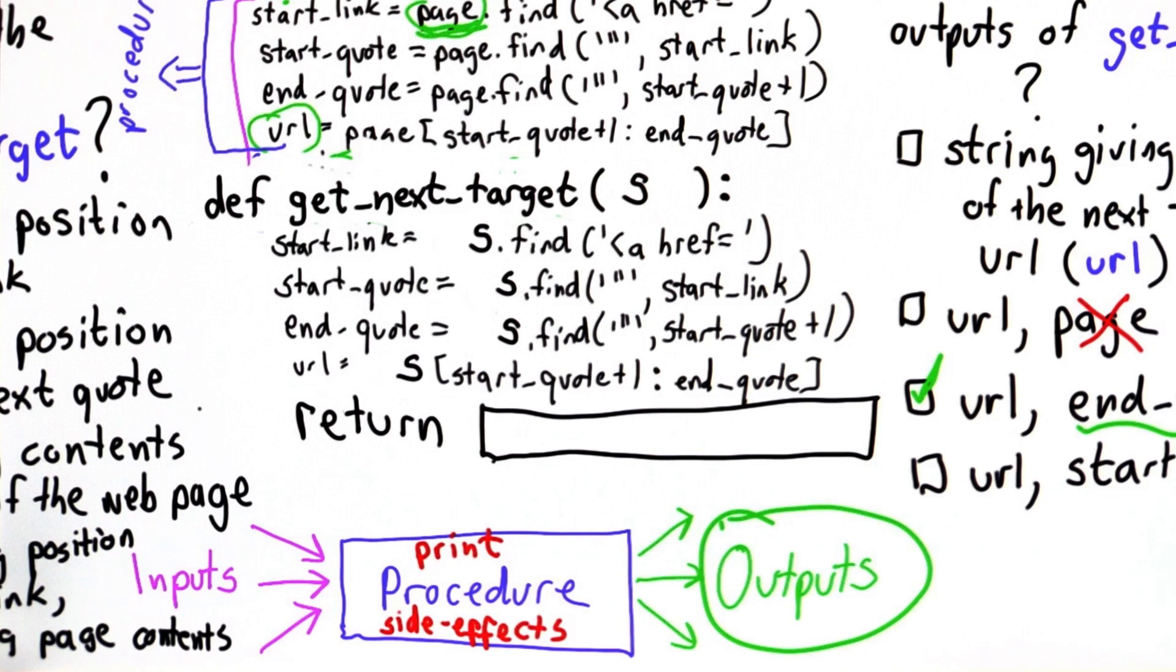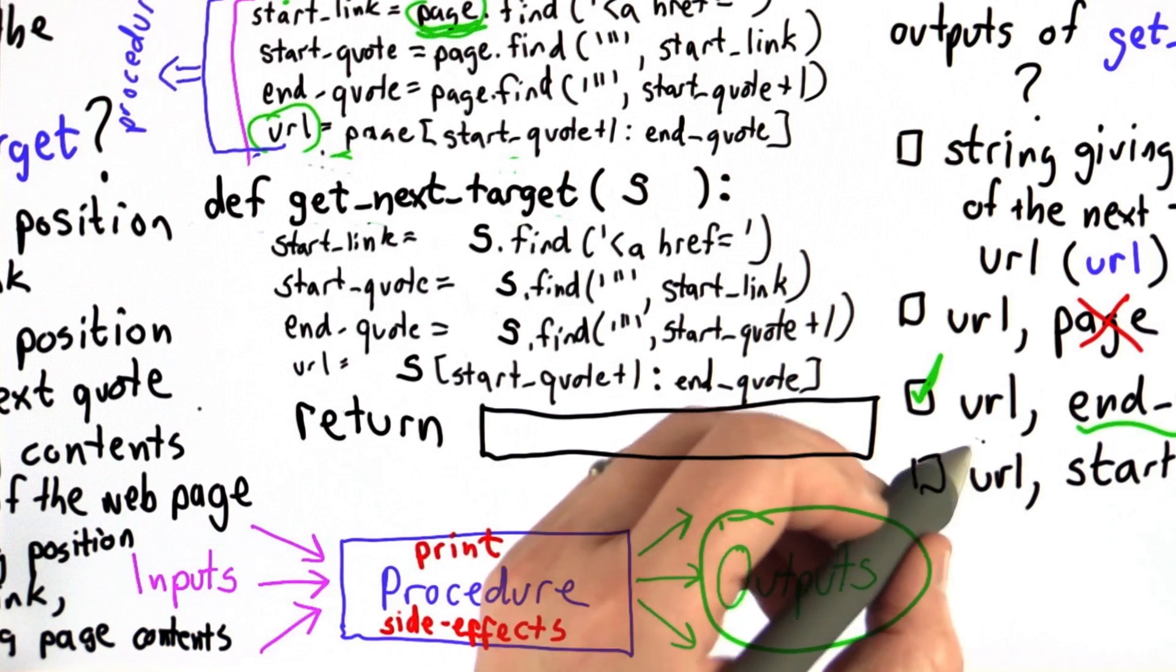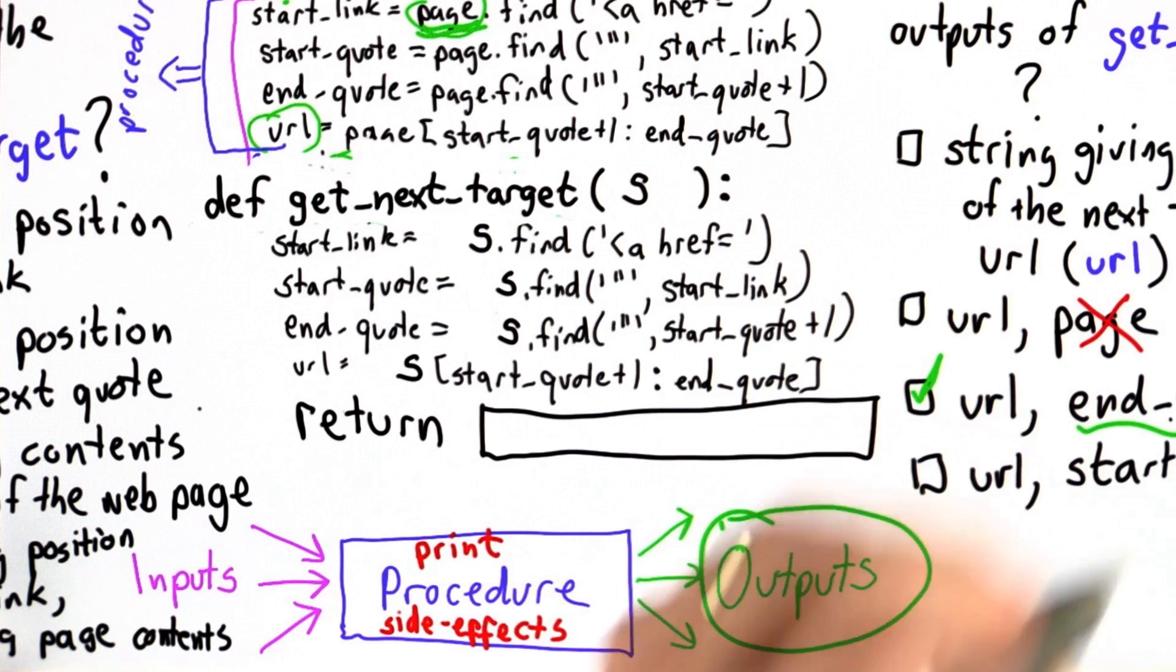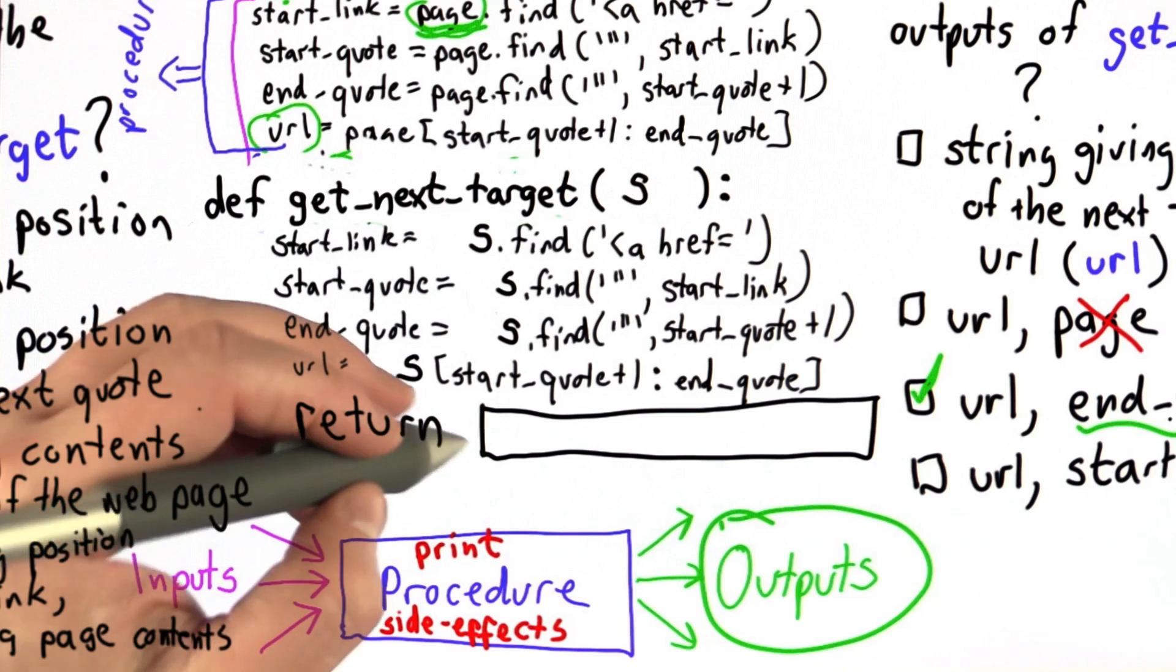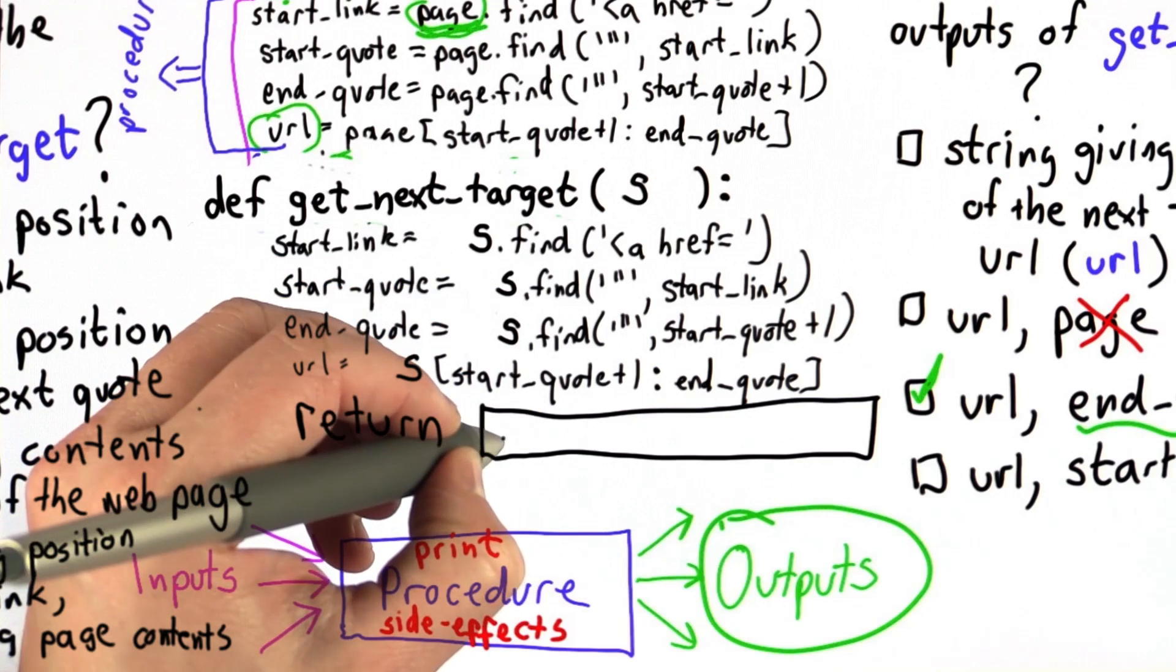So the answer is we need to return two things. We want the outputs to be the value of url and the value of end quote, so we know both the string that was found, that's the target of the link, as well as the value of end quote. And we can do that by just returning those two values.